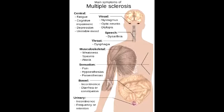What is multiple sclerosis? Multiple sclerosis is an autoimmune inflammatory disease in which the myelin sheath around axons of the brain and spinal cord are damaged, leading to loss of myelin and scarring.